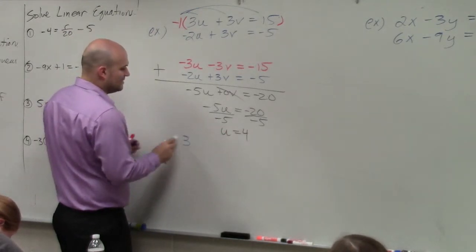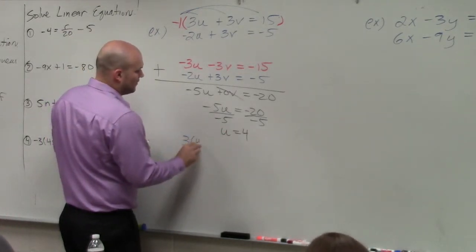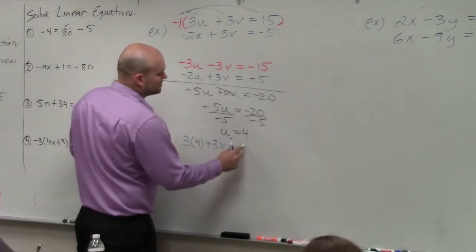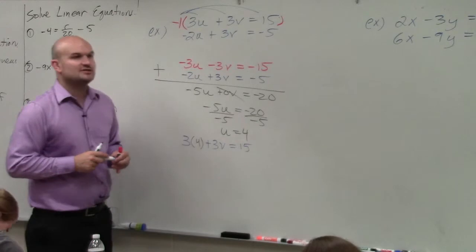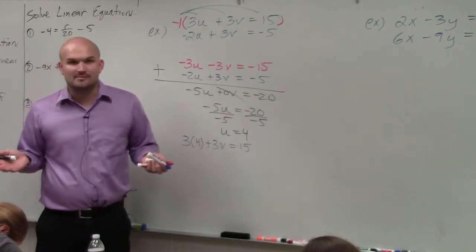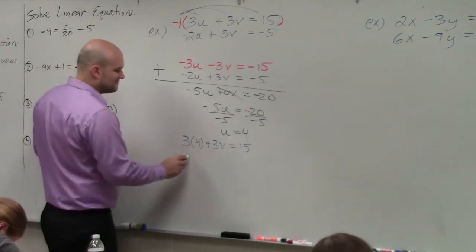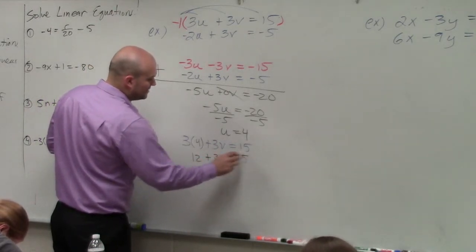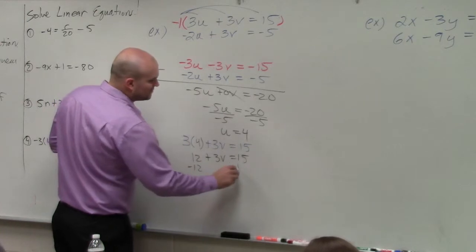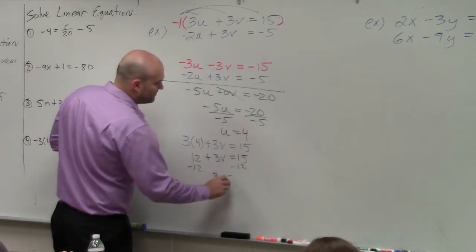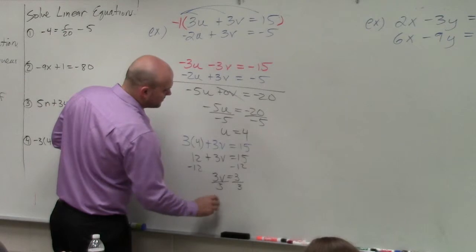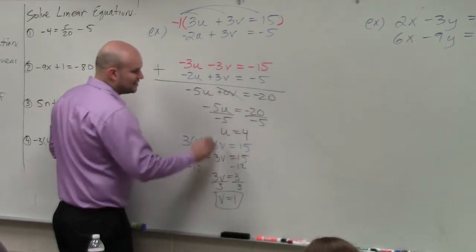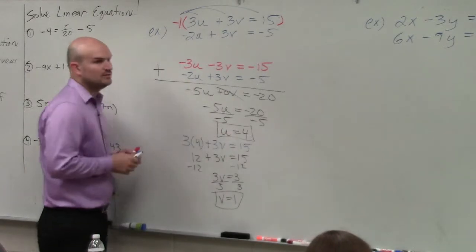So I'll do 3 times 4 plus 3v equals positive 15. I always like to choose the equation that doesn't have as many negatives, because that's where I make mistakes. 3 times 4 is 12 plus 3v equals 15. Subtract 12. Subtract 12. 3v equals 3. Divide by 3. V equals 1. So my solution is v equals 1, u equals 4.